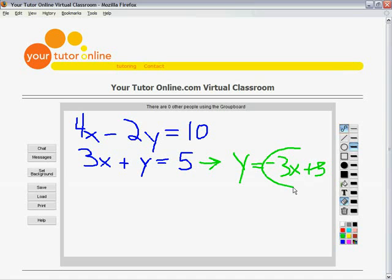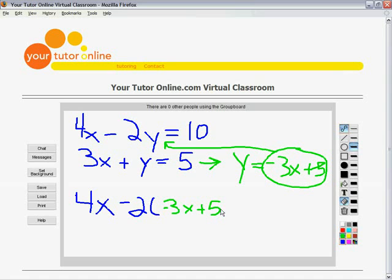And we can take that, just like we did before, and plug it into the other equation wherever we see a y. 4x minus 2, plug in the y, negative 3x plus 5 is equal to 10.